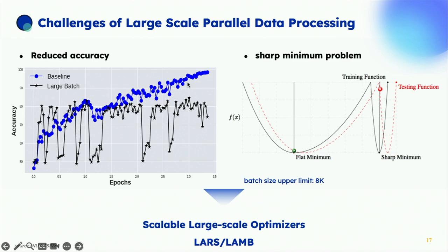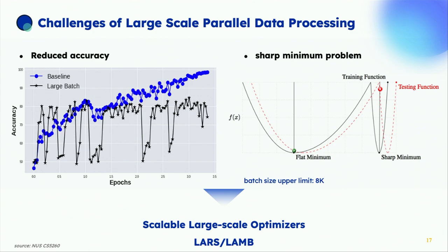If you just take an algorithm out of the box and increase the batch size, does it converge? The answer is no — it stagnates. There's also the problem that with a large batch size you may land at a sharp minimum rather than a flat one, leading to poor generalization. Current systems without modification are limited to a batch size of about 8,000, which doesn't allow much parallelism. To fix these problems, we developed two new approaches now widely used: scalable large-scale optimizers called LARS and LAMB. LARS stands for Layer-Wise Adaptive Rate Scaling, and LAMB stands for Layer-Wise Adaptive Moments Optimizer for batch training.